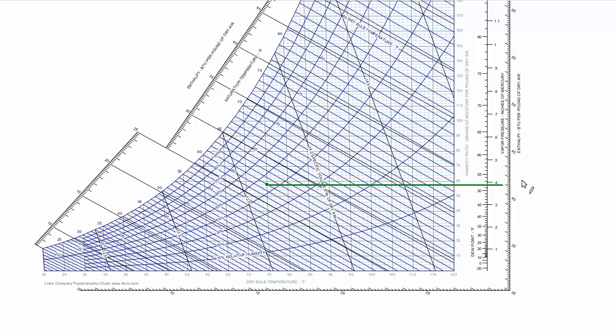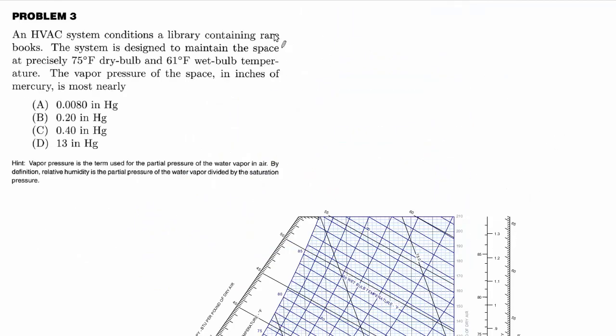So that's going to be our answer. The partial pressure of water vapor is about, it's just shy of 0.4. We'll call it 0.4 inches of HG. And that is answer C.